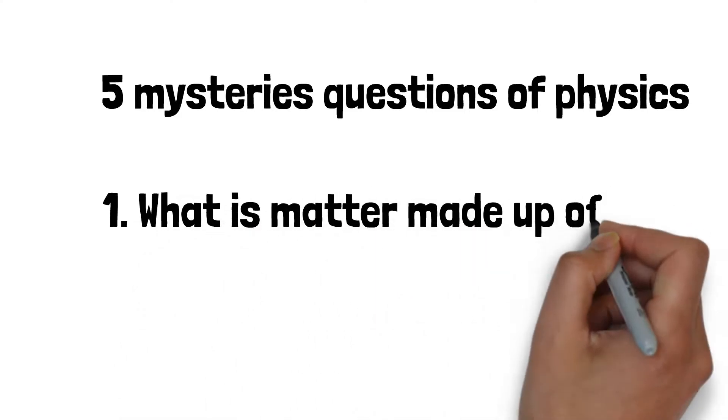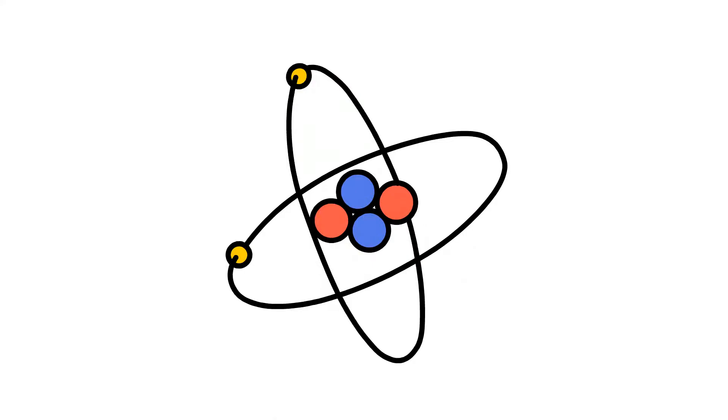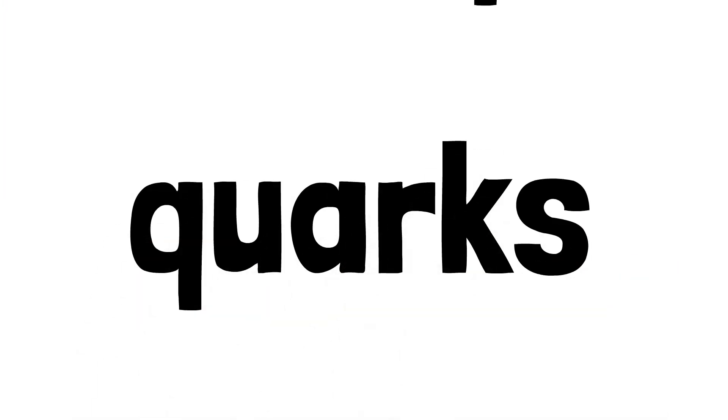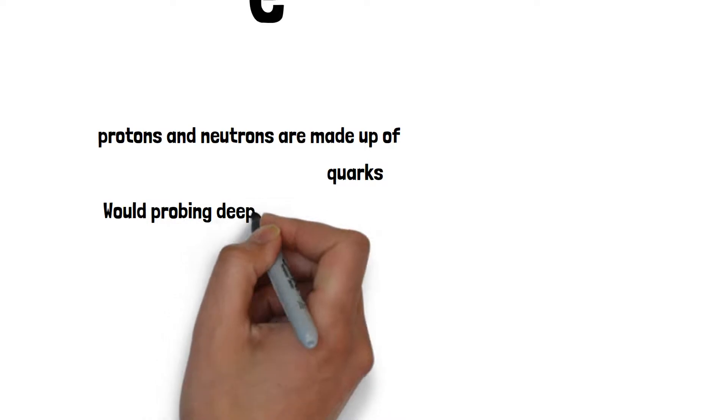Number 1 is what is matter made up of? We know matter is made up of atoms, and atoms are made up of protons, neutrons, and electrons. And we know that protons and neutrons are made up of smaller particles known as quarks. Would probing deeper uncover particles even more fundamental? We don't know for sure.